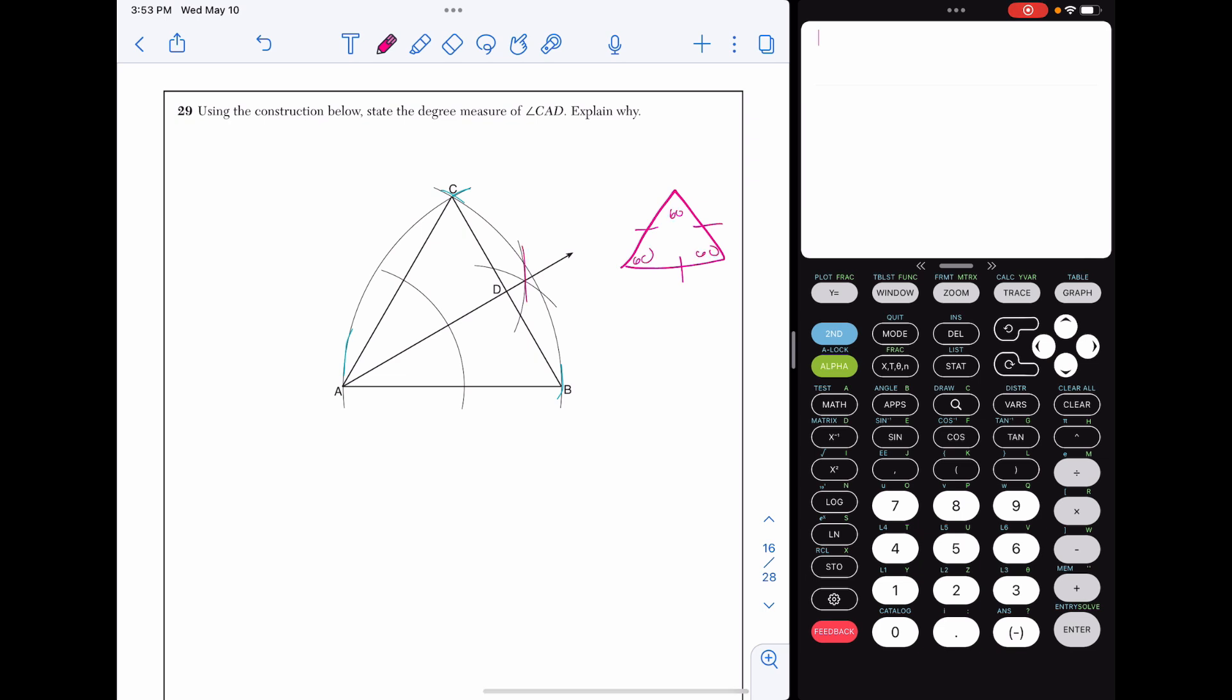But we can tell through this that we have an angle bisector. So that's going to make this angle 30. So I'm going to write that triangle CAB is an equilateral triangle. So angle CAB equals 60 degrees. Since the angle is being bisected, the measure of angle CAD is equal to 30 degrees.